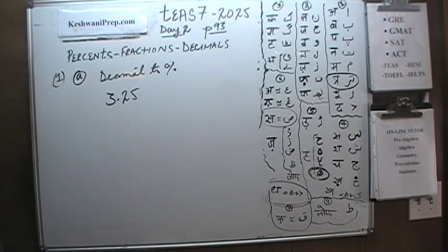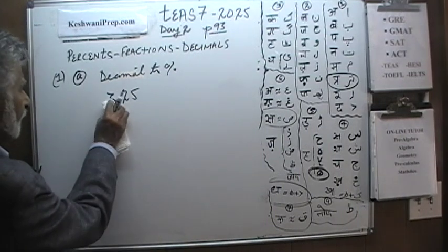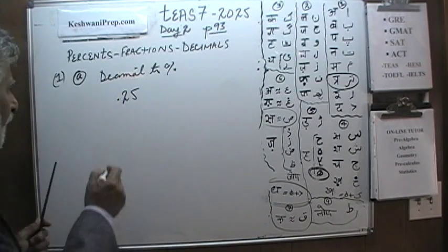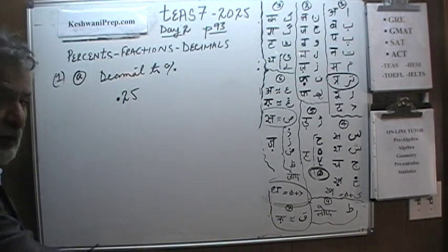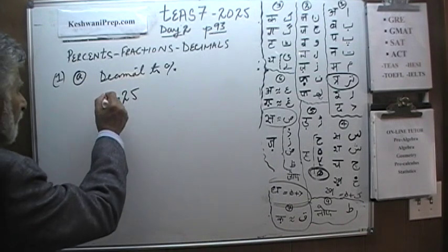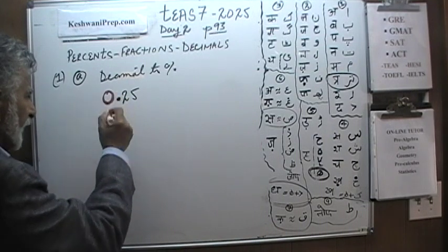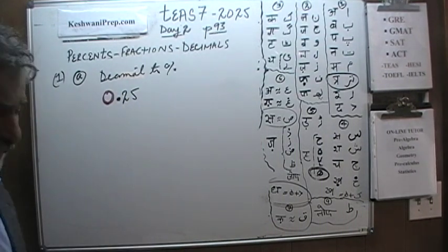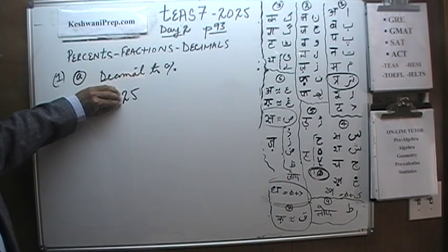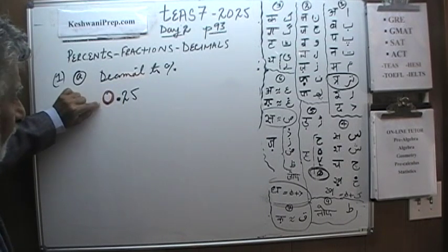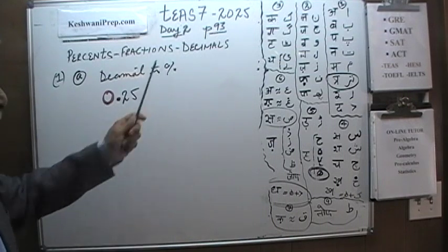Whenever we have to convert a decimal to a percent, let's look at something simple first. Let's pretend that instead of 3.25, they had given us 0.25. Had it been just 0.25, we would have had a leading zero. A leading zero is always put here to draw attention to the fact that it is 0.25 and not 25 — otherwise you might miss the decimal. To make sure the reader does not miss the decimal, we put a leading zero. So suppose this is what we were given and we are asked to convert this decimal into a percentage.